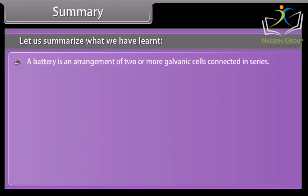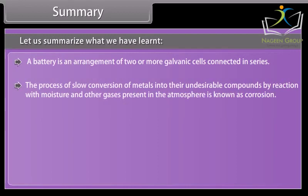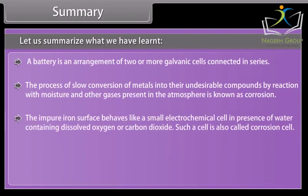A battery is an arrangement of two or more galvanic cells connected in series. The process of slow conversion of metals into their undesirable compounds by reaction with moisture and other gases present in the atmosphere is known as corrosion. The impure iron surface behaves like a small electrochemical cell in presence of water containing dissolved oxygen or carbon dioxide. Such a cell is also called corrosion cell.